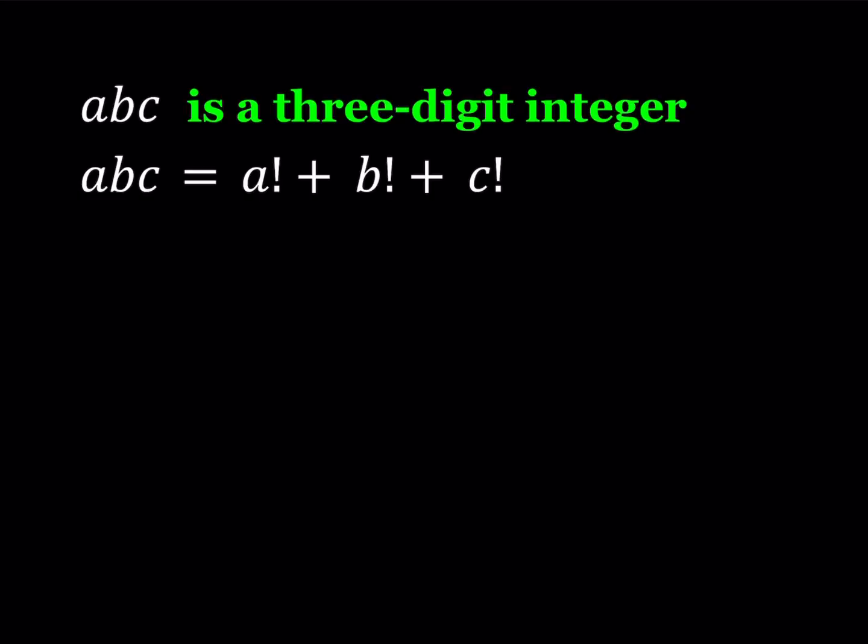Hello everyone. In this video we're going to be solving a factorial equation. We have ABC as a three-digit integer and it is equal to the sum of the factorials of its digits. ABC are digits, and this number is basically made up of its digits in a factorial way. These numbers are very special and they're very rare — we'll talk about that at the end.